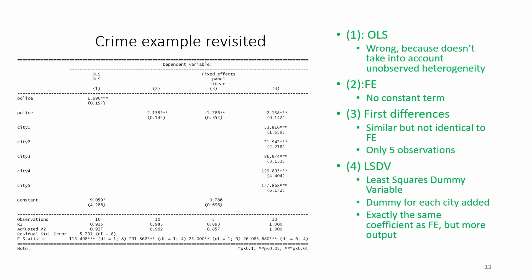Model 4 is basically the same thing as model 2, but with more output. The coefficient on police is exactly the same, at minus 2.158. The number of observations is the same.